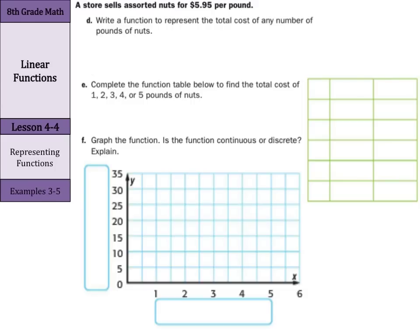A store sells assorted nuts for $5.95 per pound. Write a function to represent the total cost of any number of pounds of nuts. Well, we could write that saying, alright, our total cost is going to be C. And that's going to equal $5.95 per pound P. And we're going to multiply that since one pound would be one times $5.95, two pounds would be two times $5.95, and that's it for our function.